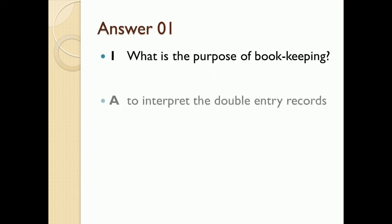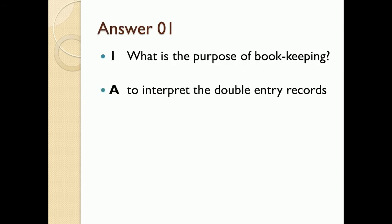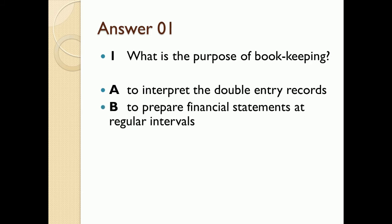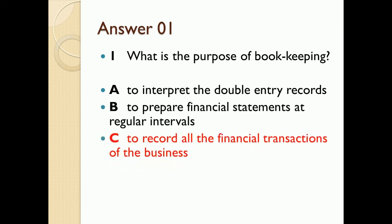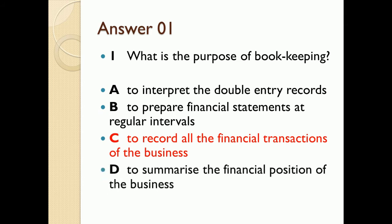Option A is not correct because it doesn't go with bookkeeping. Option B is also not the answer. Option C — to record the financial transactions of the business — is the core responsibility of the bookkeeper. That is the prime responsibility: maintaining ledgers and preparing the double entry system. Option D is definitely not the answer.